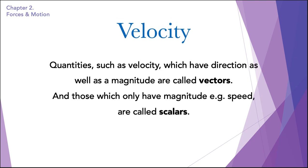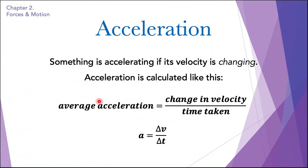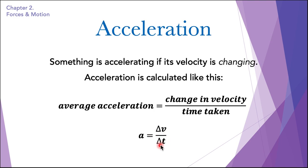Now we can move on to understanding acceleration. Something is accelerating if its velocity is changing. Average acceleration is equal to change in velocity divided by time taken. This is the equation used to calculate acceleration. In symbols: a = Δv/Δt, where Δv means change in velocity and Δt means change in time.